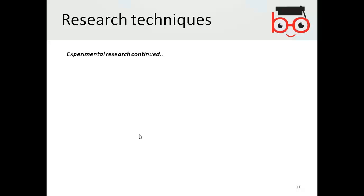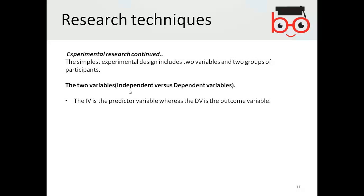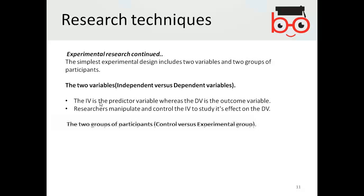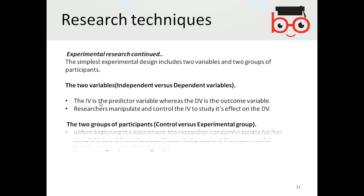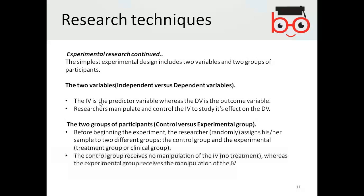The simplest experimental design includes two variables and two groups of participants: independent versus dependent. We are generally discussing the types of research superficially at this stage.